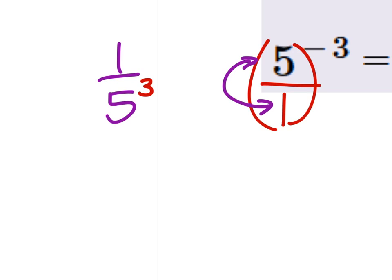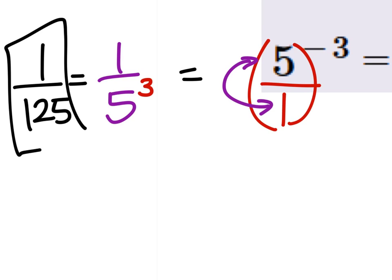So we change the sign, and 5 to the power of 3 would be 125. And this would be really our final answer then.